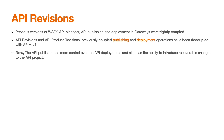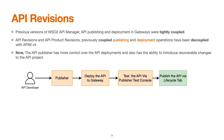Now the publisher has more control over deployments — it has the ability to introduce recoverable changes to the API project. The typical flow would be: an API developer uses the publisher portal to deploy the API to the gateway and test it via the test console. If everything looks fine, they use the lifecycle tab to publish the API.